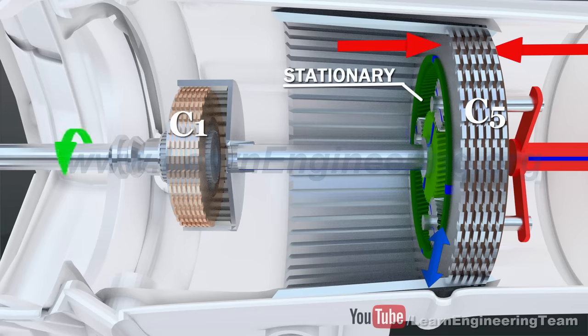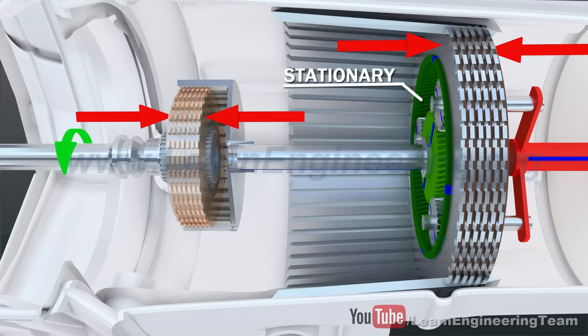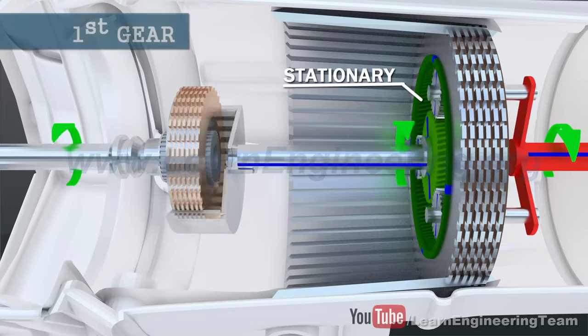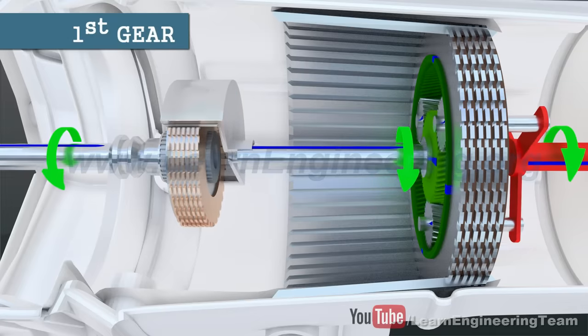In order to achieve the first gear, just apply both the clutch packs together. You can note that the input shaft will turn the sun gear. Since the ring gear is stationary, the output shaft will rotate as shown with almost one-third of the input speed.